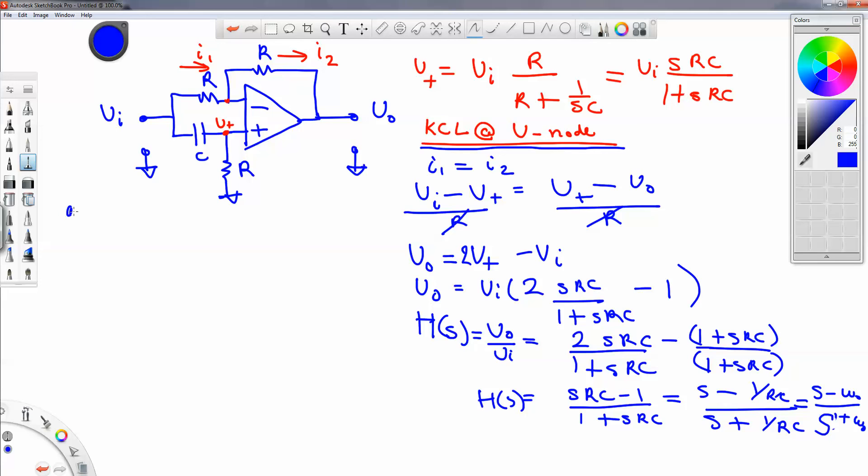So at DC, the magnitude of H(s) at s equal to 0 equals 1. Because when s is 0, you have minus omega naught over omega naught, and the absolute value of that is just 1.